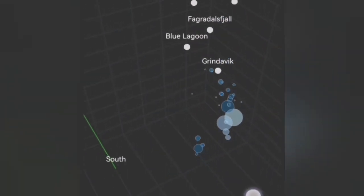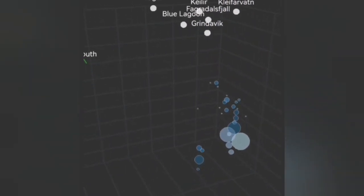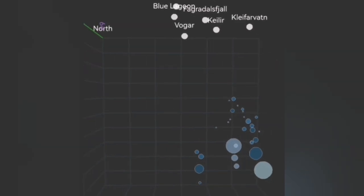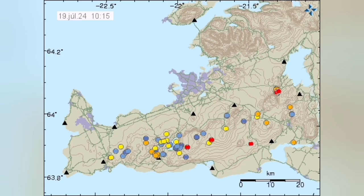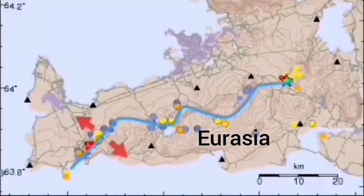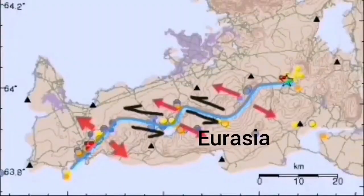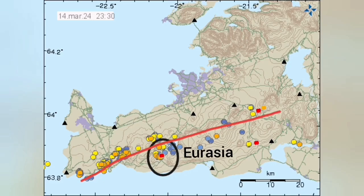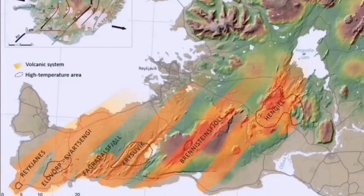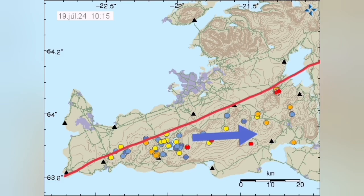This is the contact point of the Eurasian and American plates. The Eurasian plate is moving eastward, and as it moves, transform faults transfer the movement toward the east. This is inside the Eurasian boundary — you can see it in the red line. Eurasia is where these earthquakes and eruptions are happening.